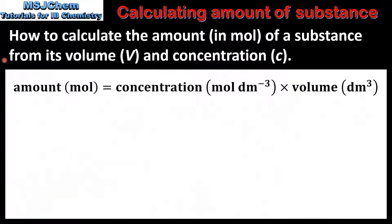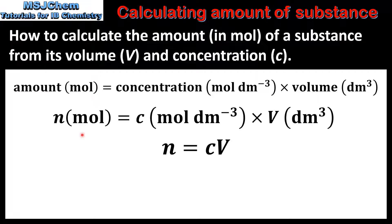Next we look at how to calculate the amount in moles of a substance from its volume and concentration. The equation is: amount in moles equals concentration in moles per decimeter cubed multiplied by the volume in decimeters cubed. This can also be written as n equals C multiplied by V, where n is amount in moles, C is concentration in moles per decimeter cubed, and V is the volume in decimeters cubed.